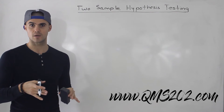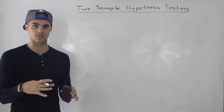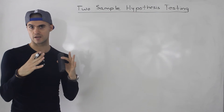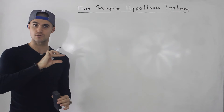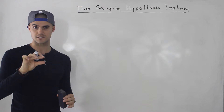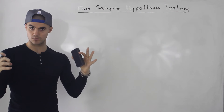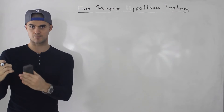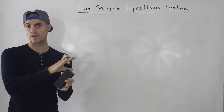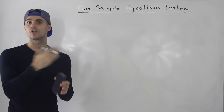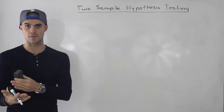Up until this point, we've been doing hypothesis testing on one sample from one population. We have a population, we have some kind of assumed truth about it, some kind of status quo, which is also the null hypothesis. We take one sample from that population, test the sample, and see whether that status quo has changed — whether there's more evidence pointing towards an alternative hypothesis.